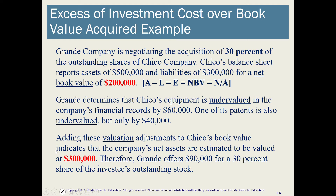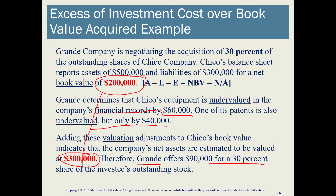When we look at the valuation of assets and liabilities for Chico, we come up with a fair market value of net assets of $300,000. There is a difference between the book value and the fair value of $100,000. Since Grande wants to purchase 30% of Chico, they will offer 30% of that $300,000 fair market value, paying $90,000 to acquire the 30% interest. That $100,000 difference comes from the undervalued equipment and patent.